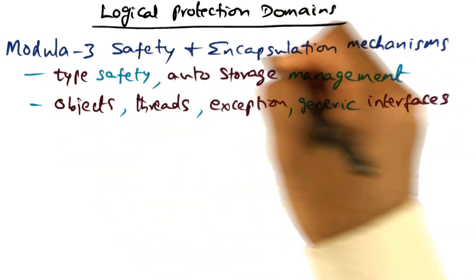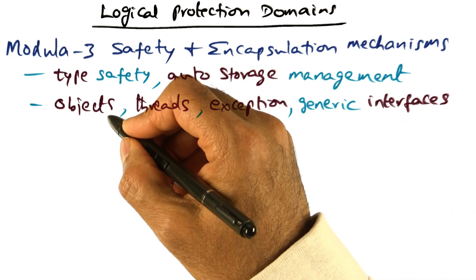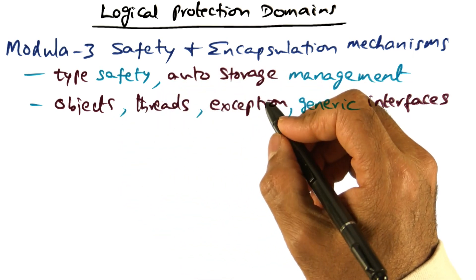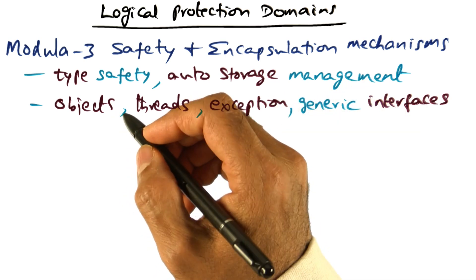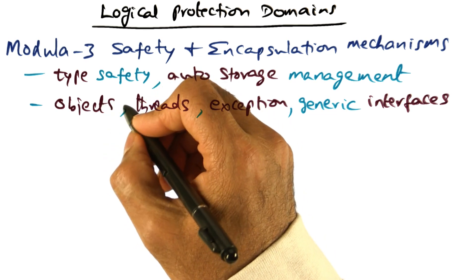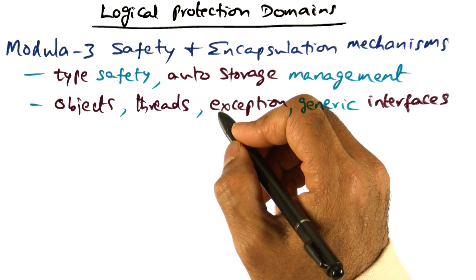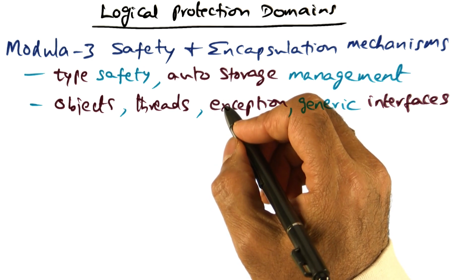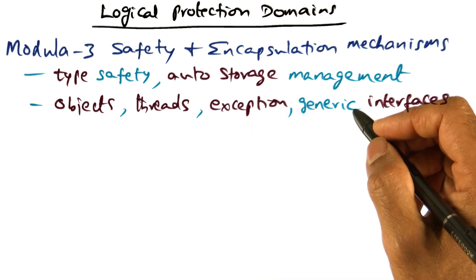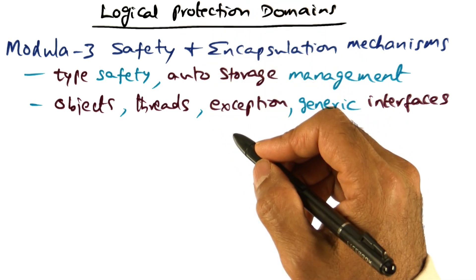All of these features allow implementing system services as an object with well-defined entry points. This allows Modular 3 to create logical protection domains. What you can do from outside the object is what the entry point methods inside the object will let you do and no more. We are getting the safety property of a monolithic kernel without having to put system code in a separate hardware address space. The logical protection domains give you both protection and performance.